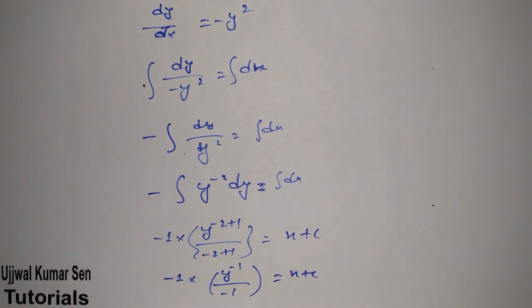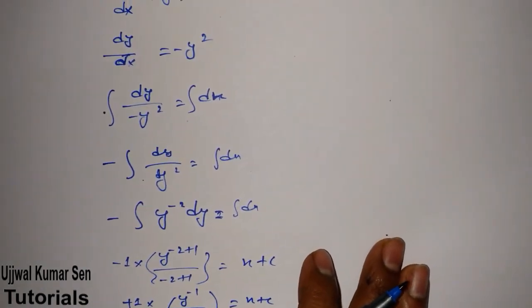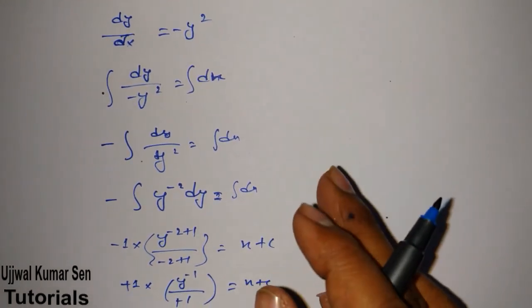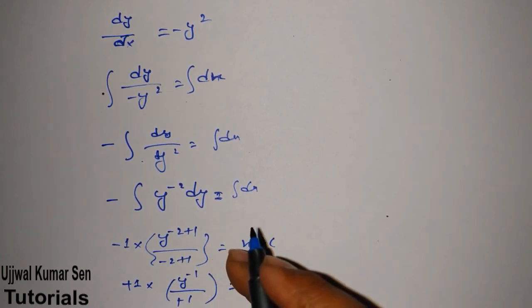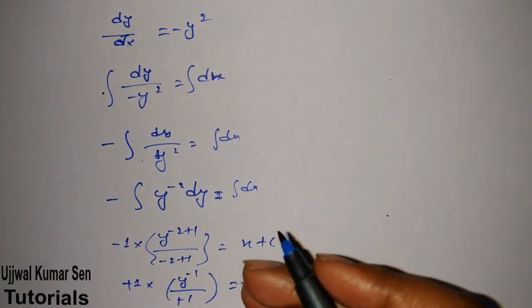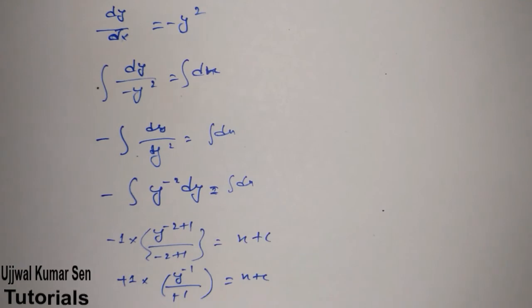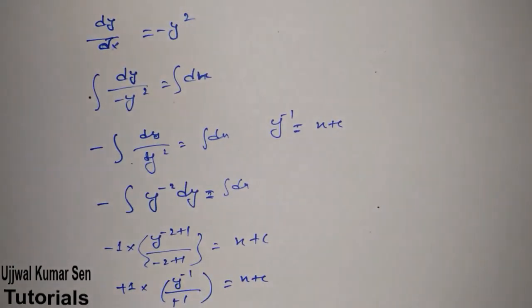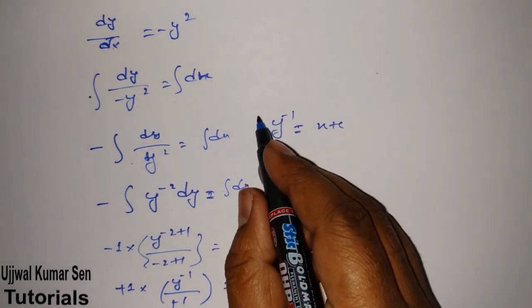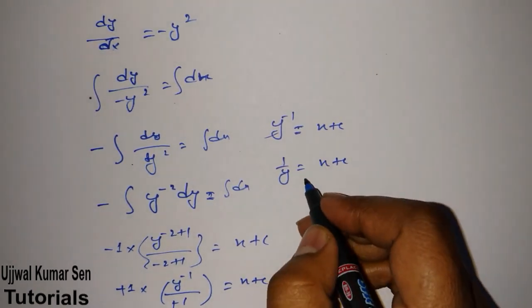Simplifying: -1 × (-1) × y⁻¹ = x + c. The two minus signs cancel, giving y⁻¹ = x + c. So 1/y = x + c, which means y = 1/(x + c) is the solution of the given differential equation.